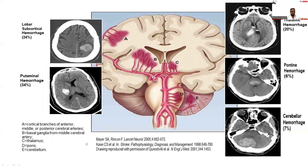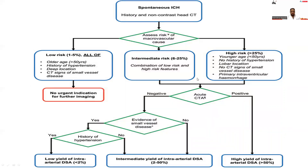Common sites of ICH: putaminal hemorrhage constitutes about 34%, lobar subcortical hemorrhage 24%, thalamic about 20%, pontine hemorrhages 6%, and cerebellar hemorrhage 7%. When there is suspicion of ICH, history is taken and non-contrast CT should be done. To assess macrovascular causes, patients are stratified as low, intermediate, or high risk. Low-risk factors include older age, history of hypertension, deep location, and CT signs of small vessel disease.